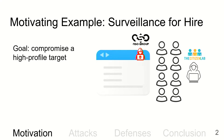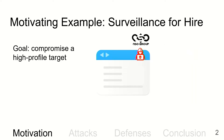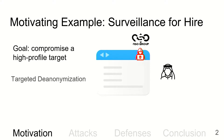Instead, the attacker adopts a better strategy: only deploying the zero-day exploit when a high-profile target visits the website. This would work only if the attacker has a reliable way to tell when the high-profile target visits the website.